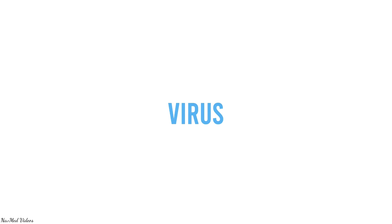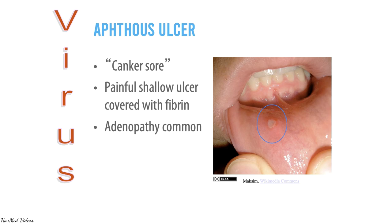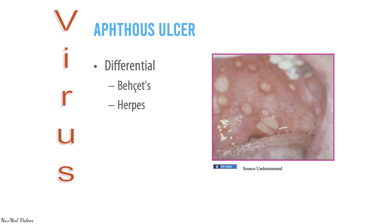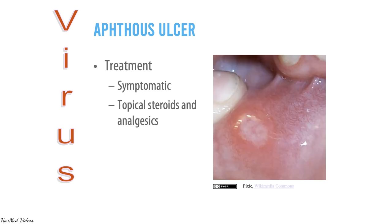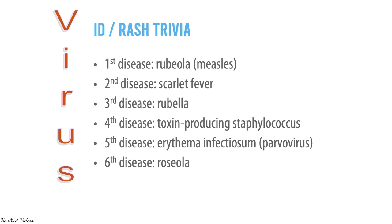Viral skin infections include aphthous ulcers, erythema infectiosum, herpes simplex and zoster, human papillomavirus, molluscum contagiosum, and warts. Aphthous ulcers (canker sores) are painful shallow ulcers covered with fibrin; adenopathy is common. Differential includes Behçet's disease and herpetic ulcers; treatment is symptomatic with topical steroids and analgesics. Erythema infectiosum (fifth disease) is preceded by fever, coryza, and headache two days before the rash; no treatment is required as it is self-limiting.